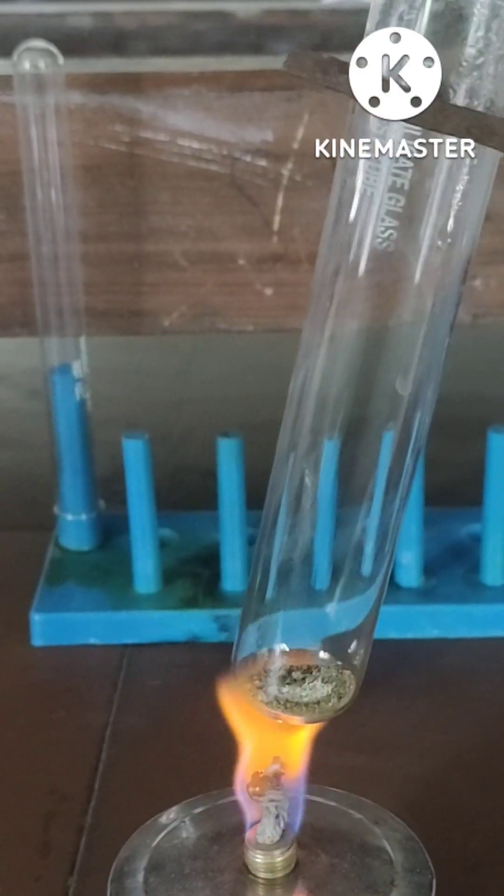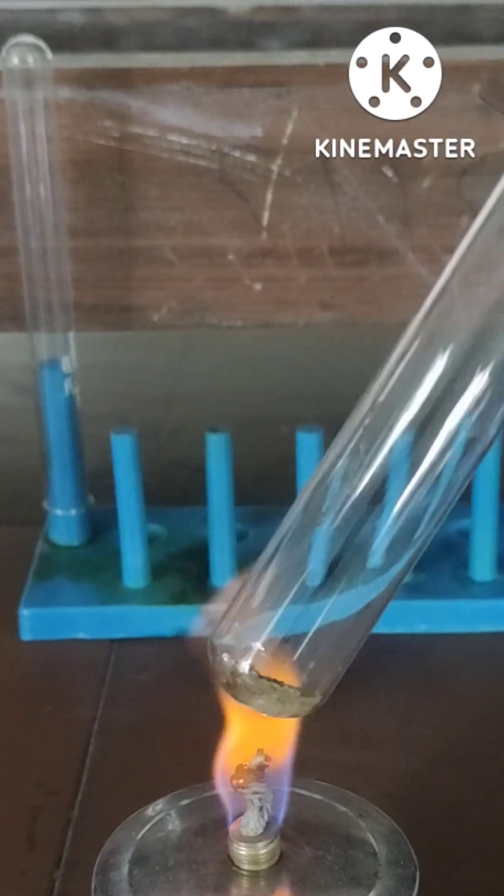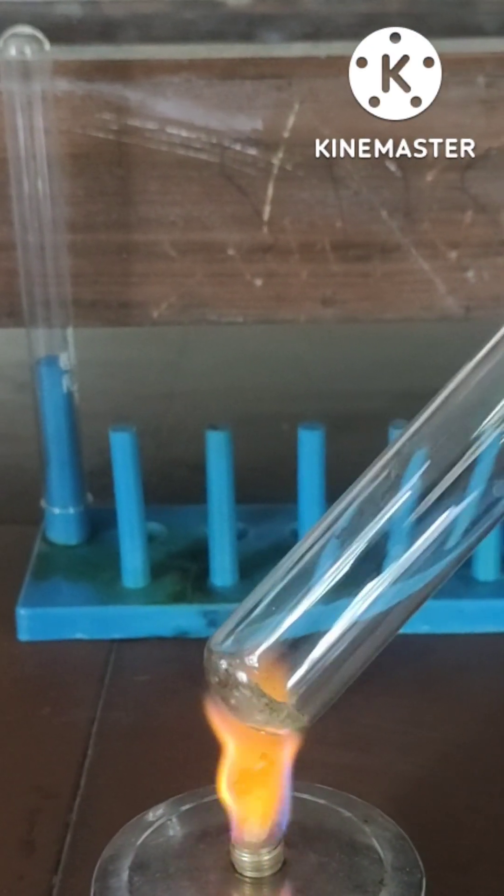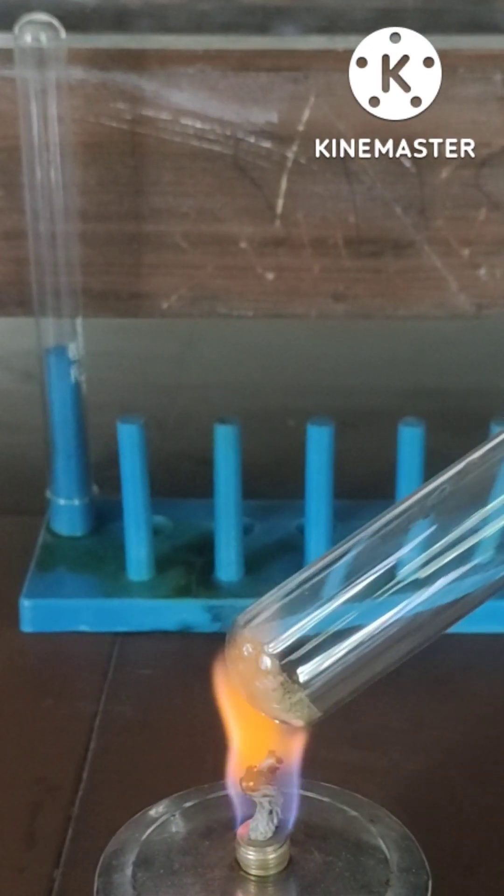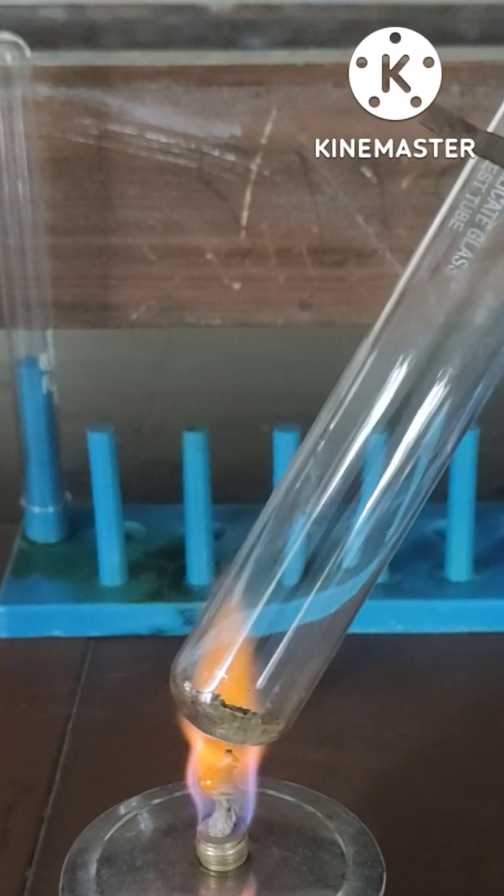After heating, the color changes from green to white, and from white it changes to dark brown.